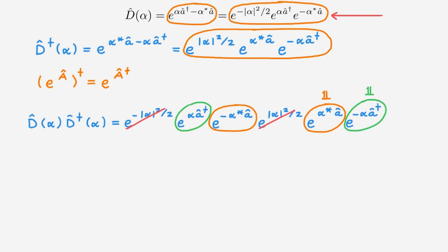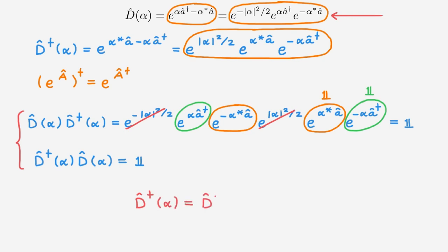Overall, we get the identity operator. Using a similar approach, D† times D is also equal to the identity. Putting these together, we see that the adjoint of the displacement operator equals its inverse, so that the displacement operator is a unitary operator.